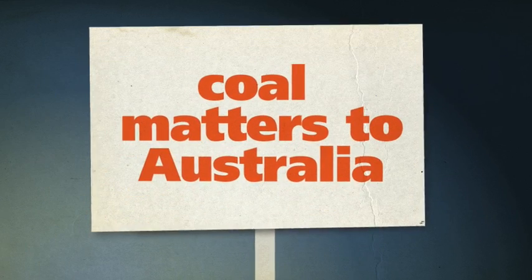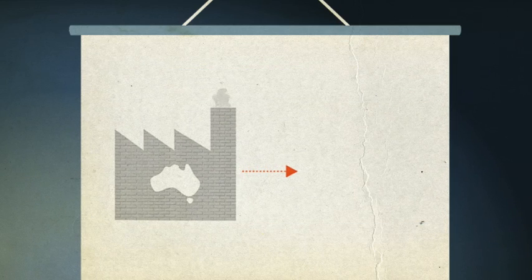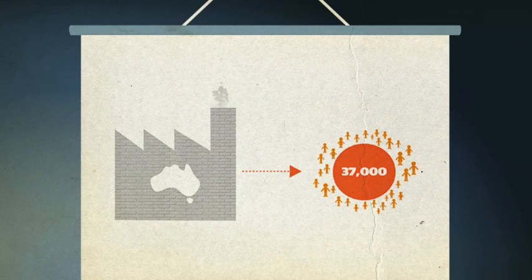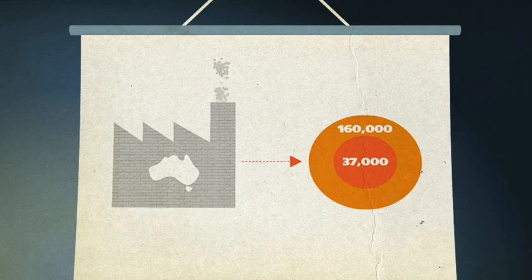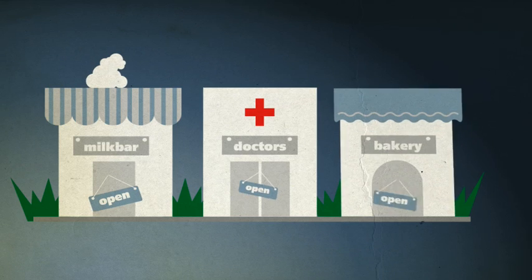Coal matters to Australia. The coal industry directly employs more than 37,000 people. 160,000 if you count indirect employment. That's what economists call jobs created to support mining.